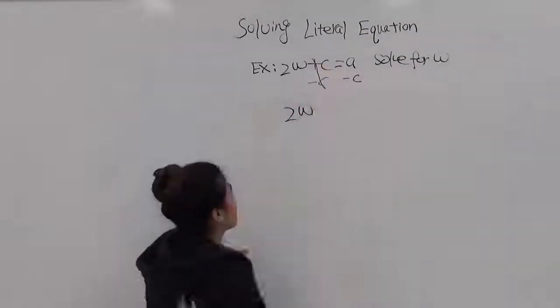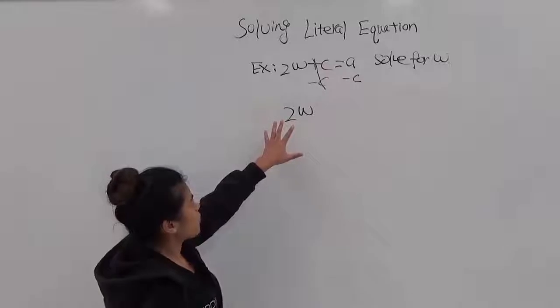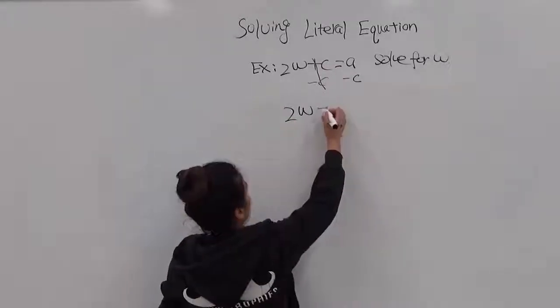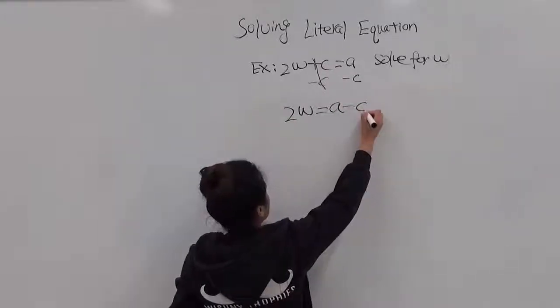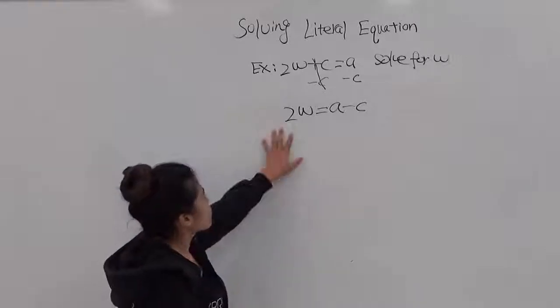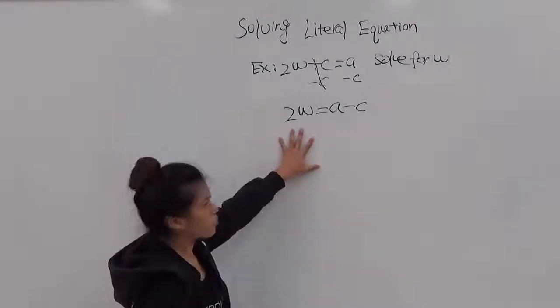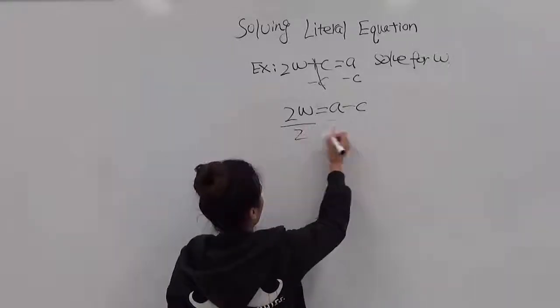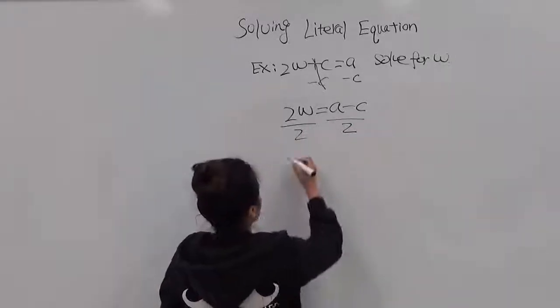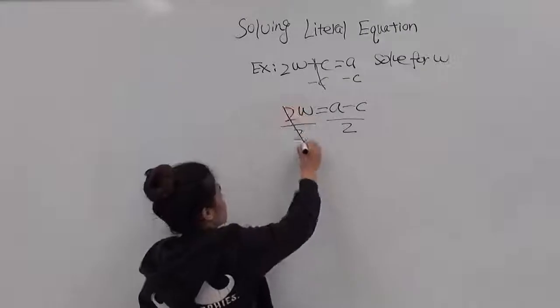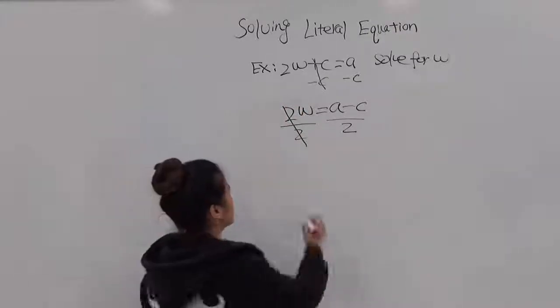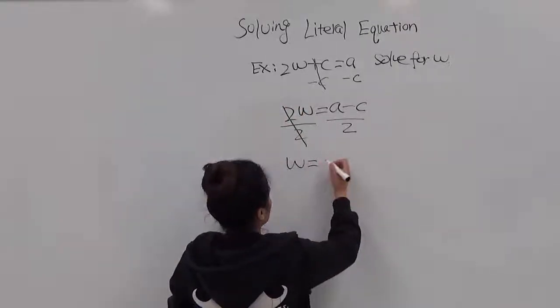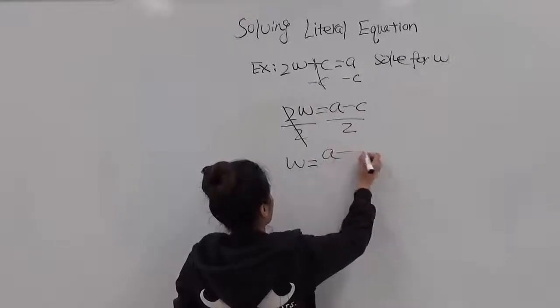So c and c are going to cancel out. Then we get 2w equals a minus c.